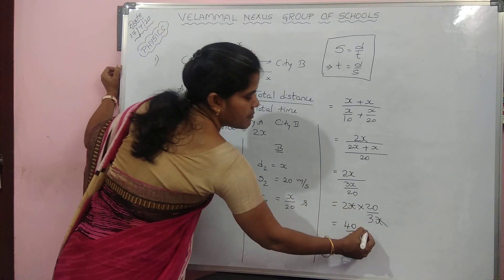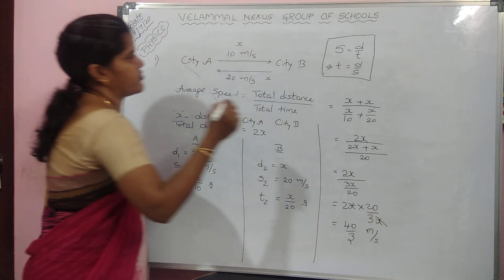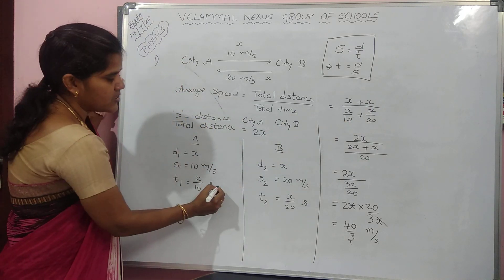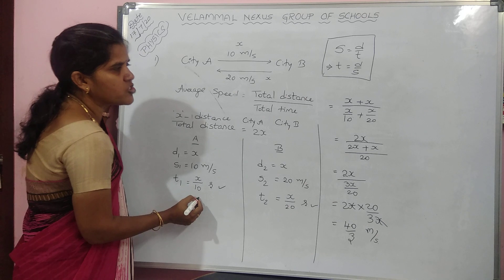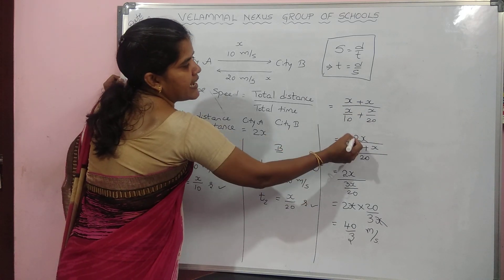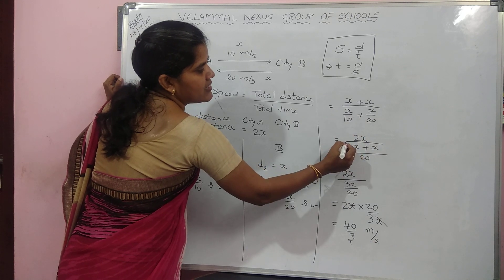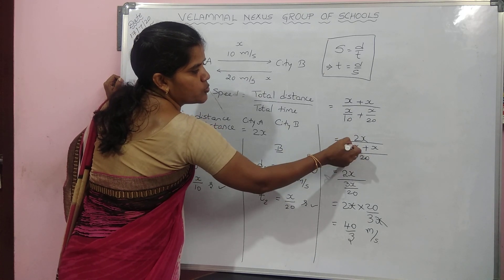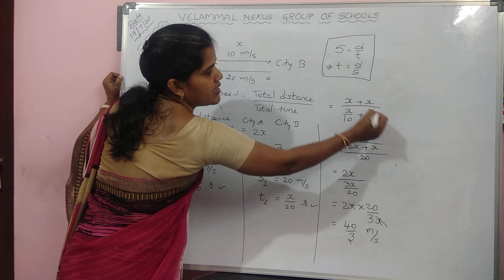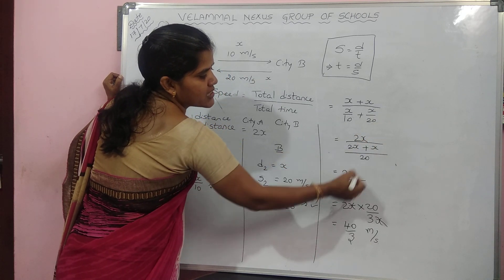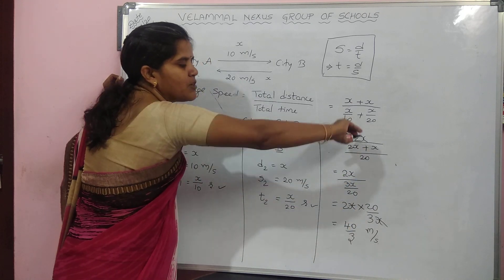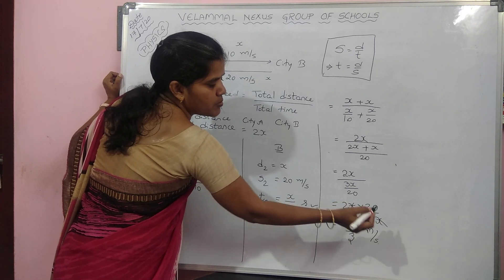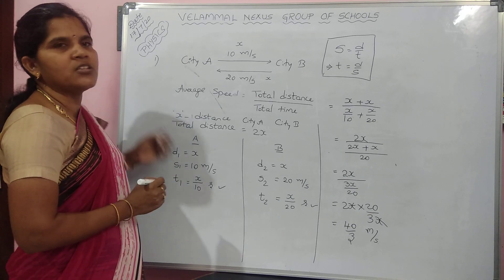40 by 3 is the average speed of the train. To repeat: total distance is X plus X equals 2X. Total time is X by 10 plus X by 20. LCM is 20, so 2X plus X equals 3X by 20. Reciprocating gives 20 by 3X. 2 into 20 is 40, denominator 3. So the answer is 40 by 3 meter per second. I hope you understood this numerical.